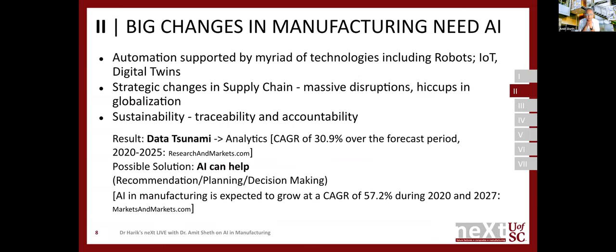In smart manufacturing, AI is changing things substantially. There's a lot of use of various technologies including robots, internet of things, and digital twins. The broader ecosystem, such as supply chain, is also changing drastically with massive disruptions in globalization. We recently finished a project with BMW on supply chain and logistics. The data plays an extremely important role, and there are a lot of interesting sustainability considerations. This has led to what is called a data tsunami — a massive amount of data being created.